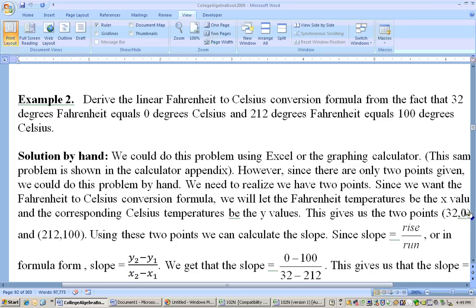So 32 comma 0 is one point from the fact that 32 degrees Fahrenheit equals 0 degrees Celsius and the other point is 212 comma 100 from the fact that 212 degrees Fahrenheit equals 100 degrees Celsius.